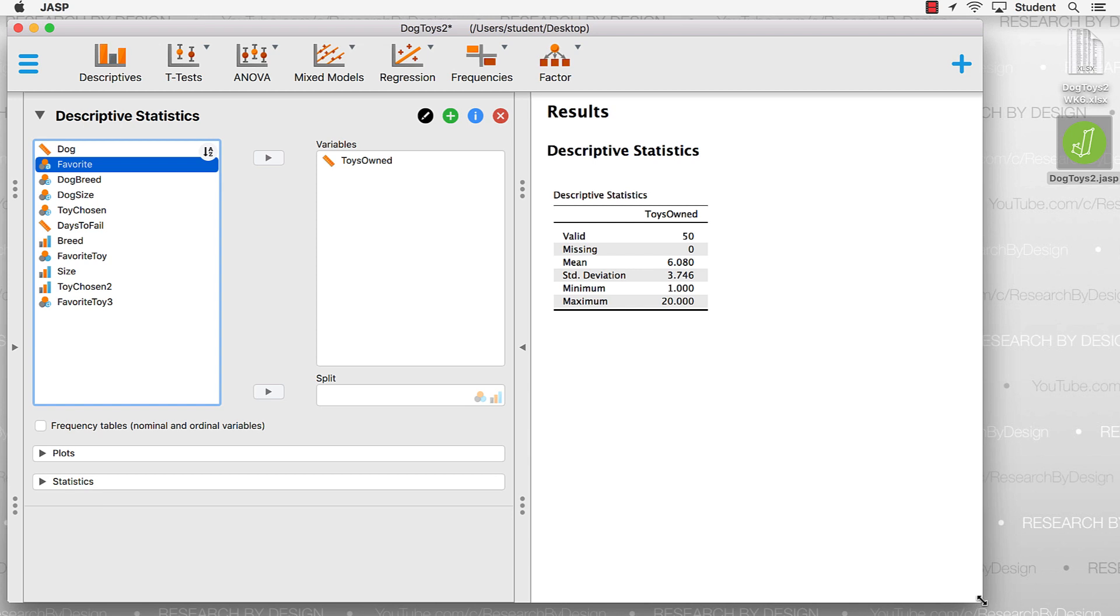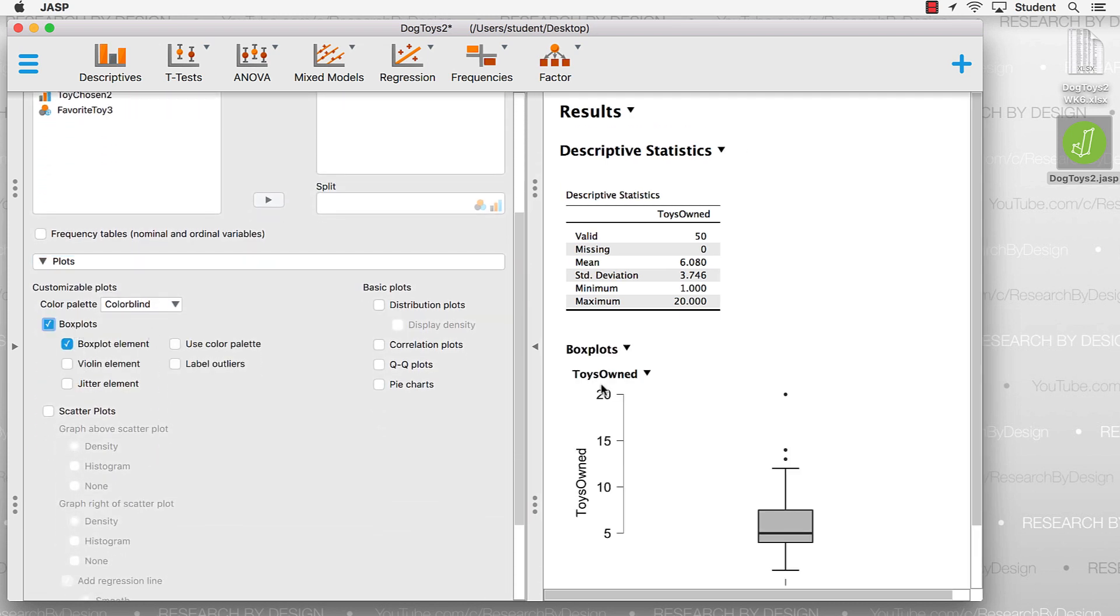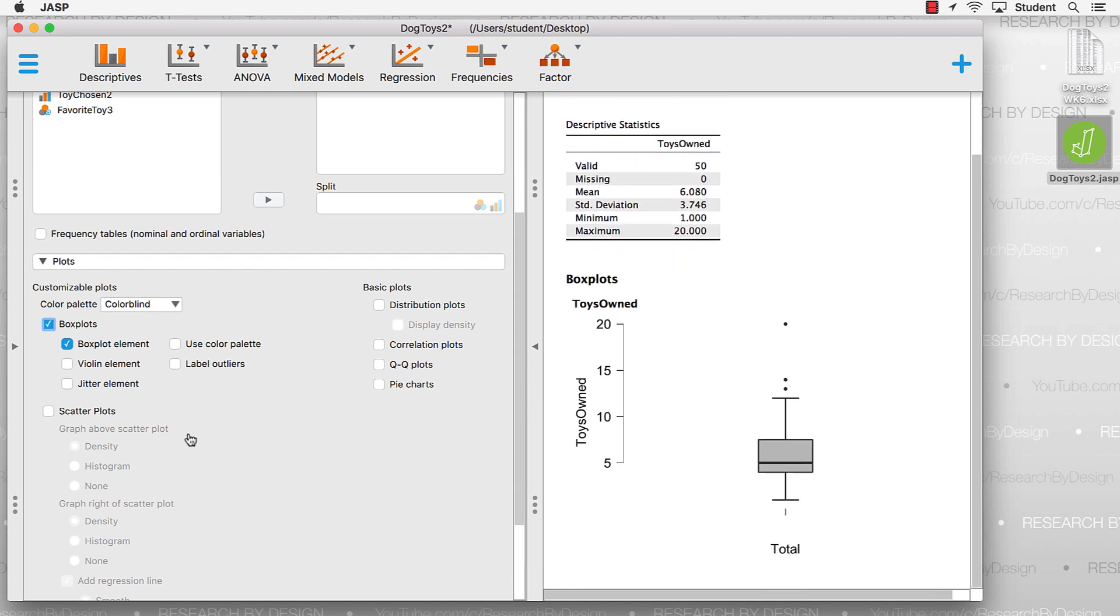Now, to create the box plot, very simple. Twirl open the plots option, and we will see the option for box plots. Now, you'll notice that we have multiple options here. With the box plot elements, we could also select the violin element, which shows us the shape of the distribution. Or, the jitter element, which includes every data point within the distribution. We could change the color palette, as well. And, we could label outliers. For this example, I think I want to turn off the color palette. Also, turn off the violin element and the jitter element.